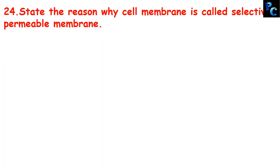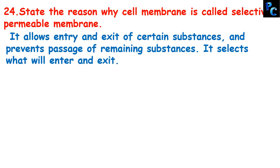State the reason why the cell membrane is called a selectively permeable membrane. It allows entry and exit of certain substances and prevents the passage of remaining substances — that is, it selects what will enter and exit. That is the reason it is called a selectively permeable membrane.